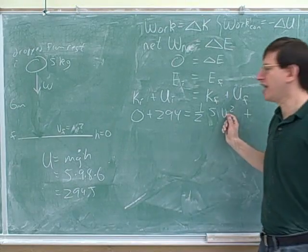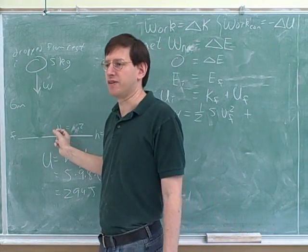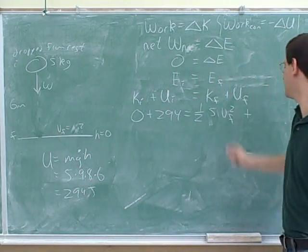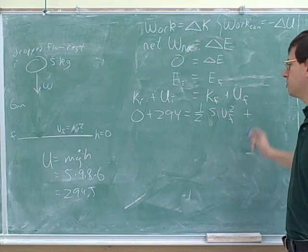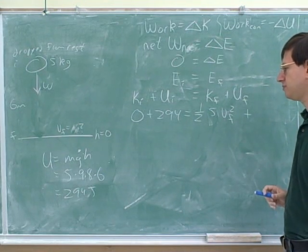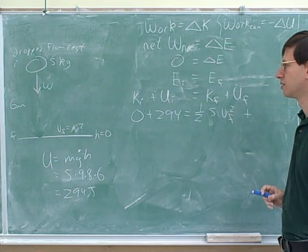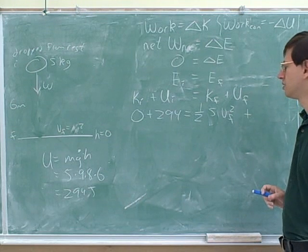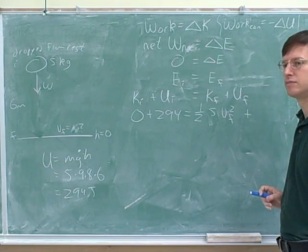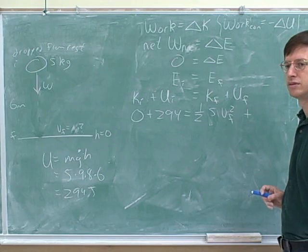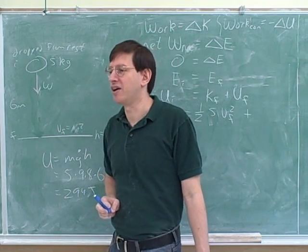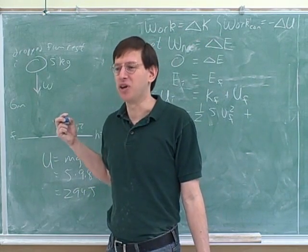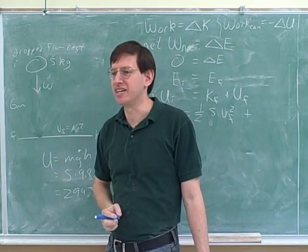It's good that we're not plugging anything in for Vf, because that's the unknown — that's what we're trying to figure out. It's good to have an equation with this variable in it. What should we plug in for Uf? I want to say 0, but it's still the instant before it hits the ground. Since it's only the instant before it hits the ground, it has negligible height, so we can say that height is 0.